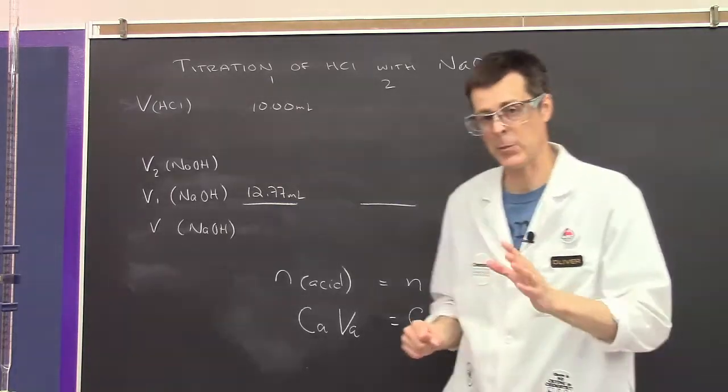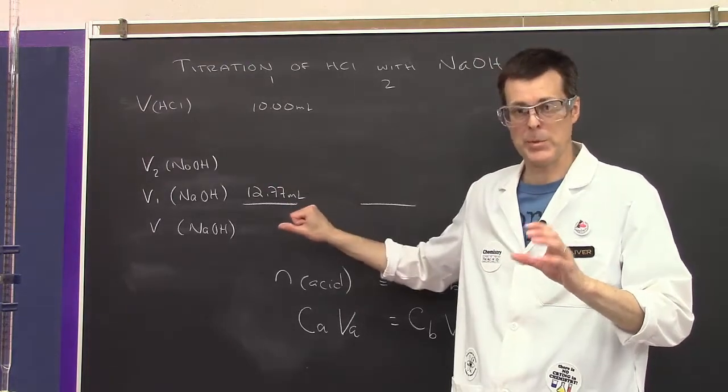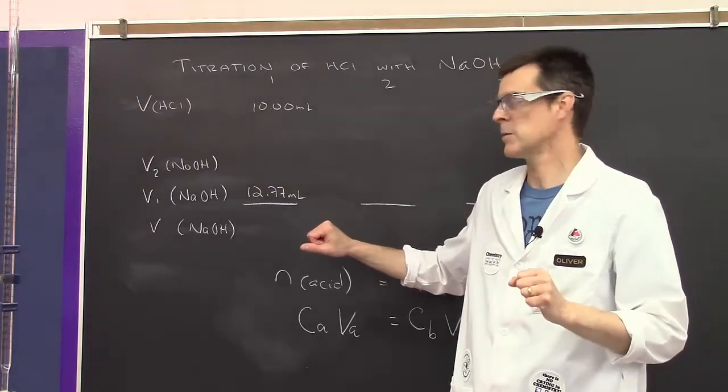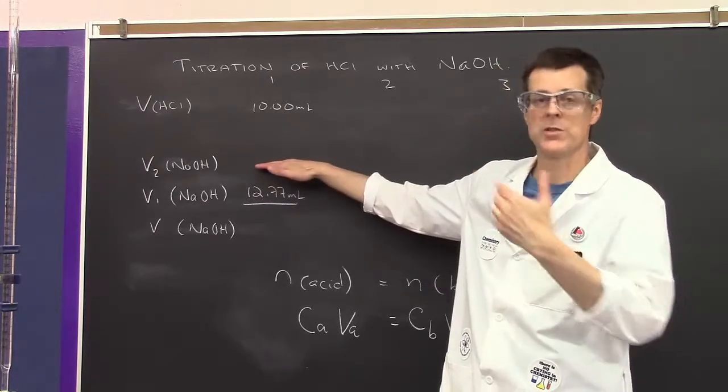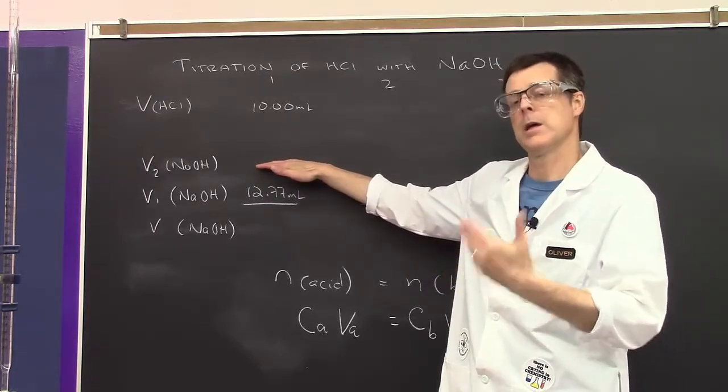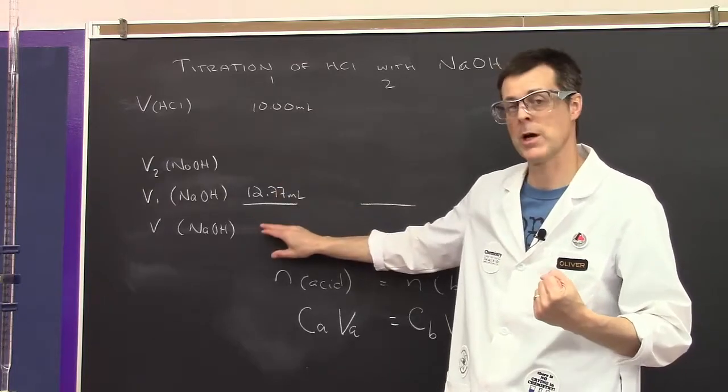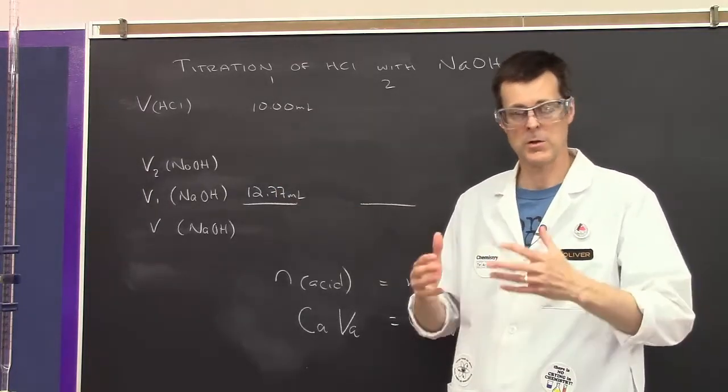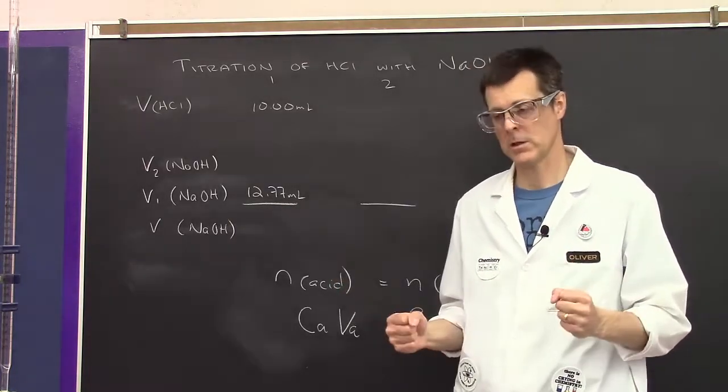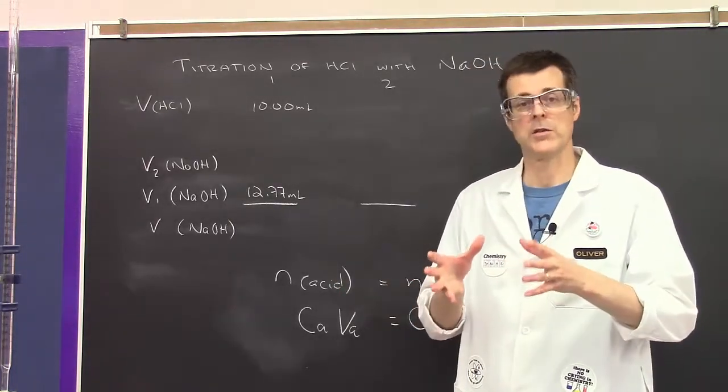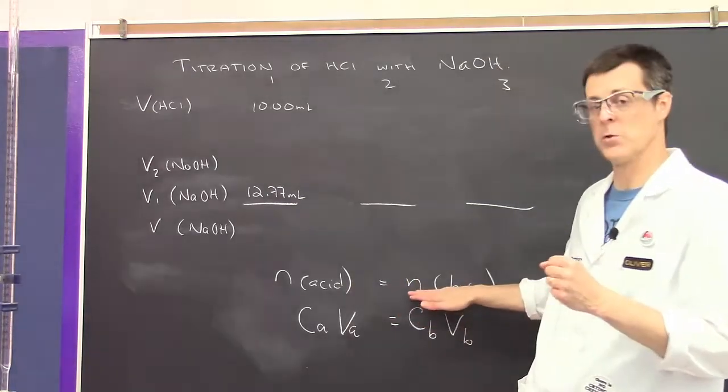The base piece, the burette, is going to be the same. I know the starting volume of my base. I will titrate to a faint pink and get my final volume, so I'll know how much sodium hydroxide I used. I'll combine that with the concentration from the previous experiment to calculate the number of moles of base.